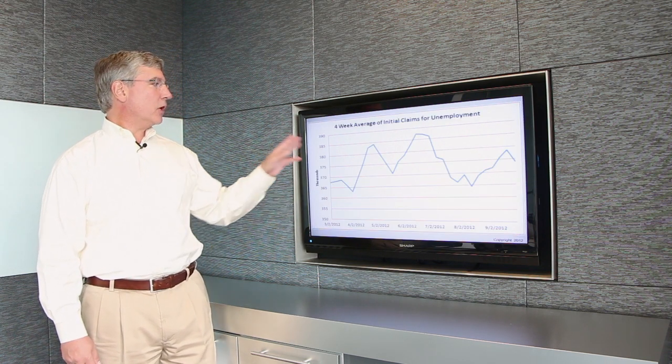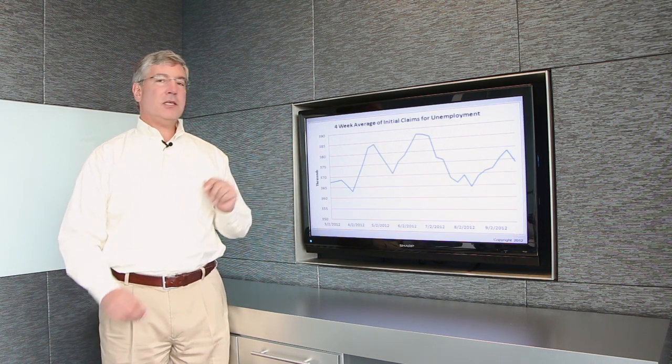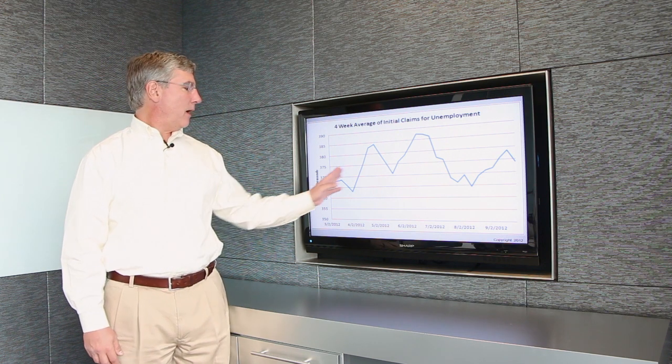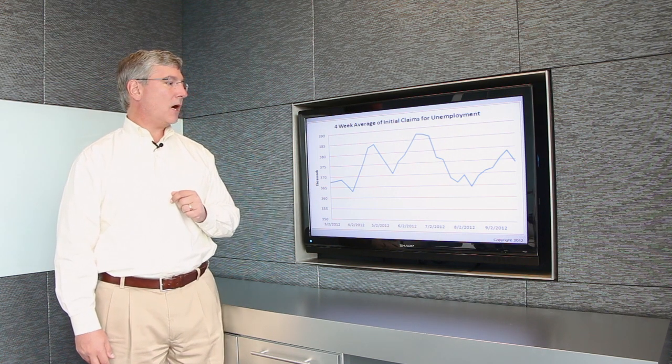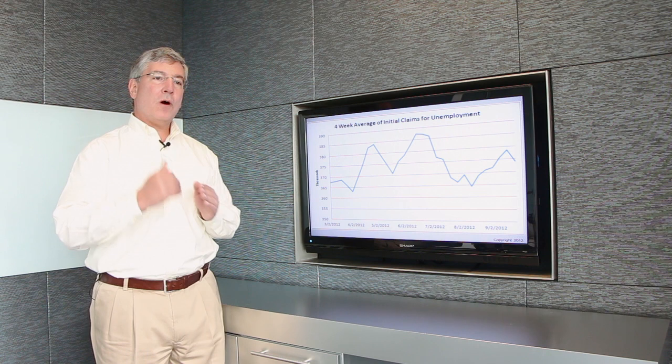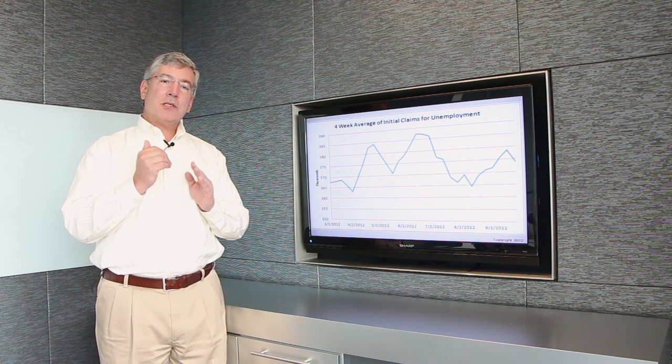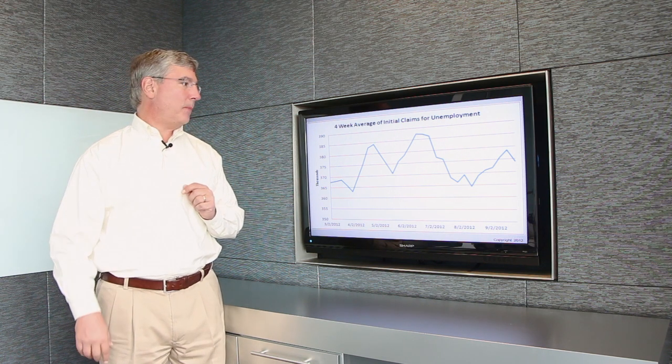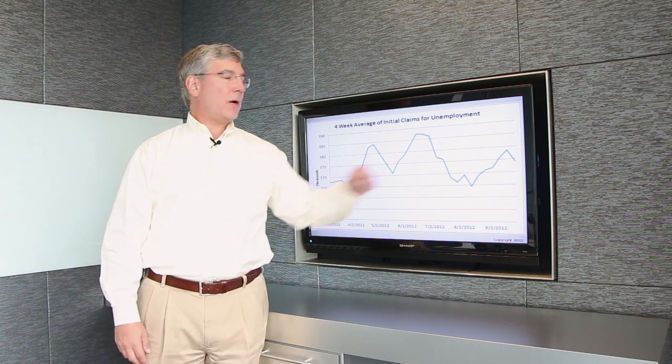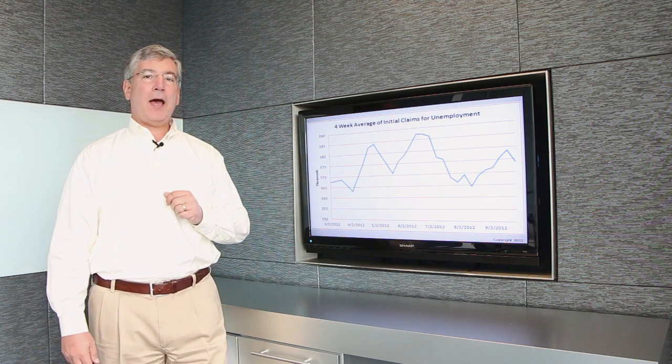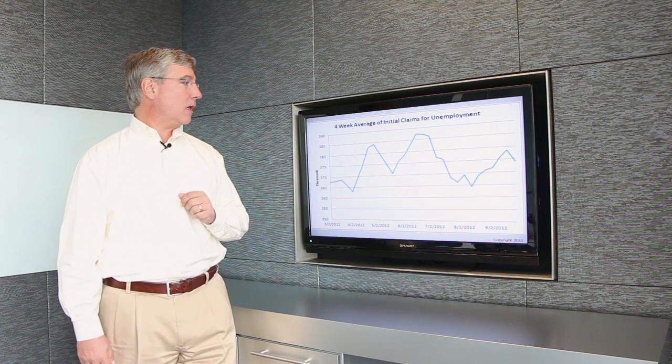The next chart shows an idea of what the initial claims for unemployment have been doing in recent times. This gives us a measure of what the job situation is on a week-to-week basis. And this line here represents the four-week moving average of the initial jobless claims.